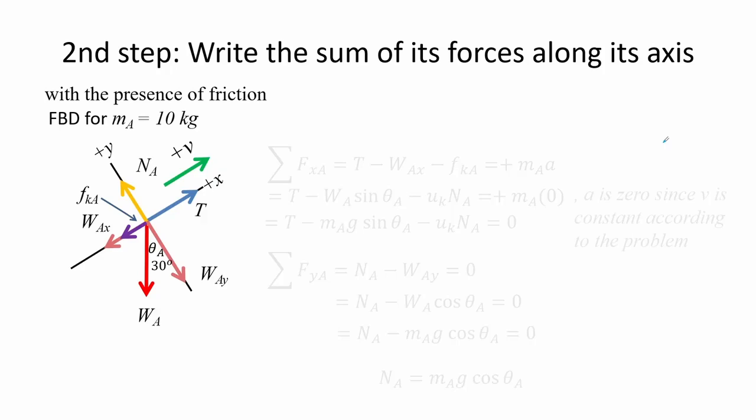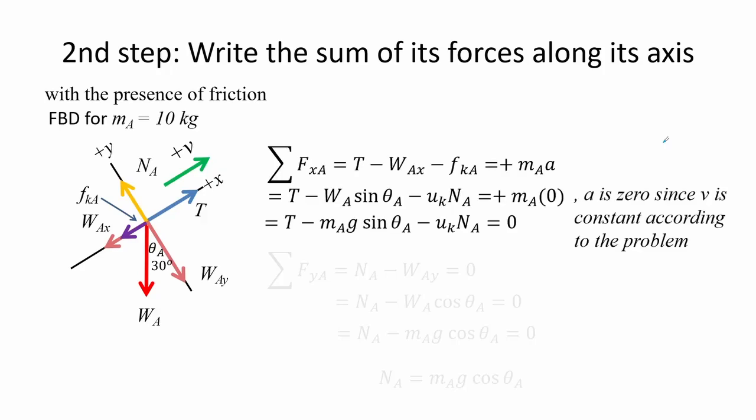Rewriting the sum of forces in order to incorporate the presence of the friction, the sum of forces along X is the only altered, and so it becomes the sum of the tension minus mass A times G times sine of theta A minus the coefficient of kinetic friction times the normal force A equals to 0.